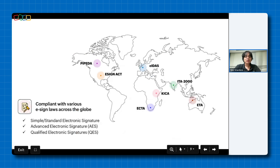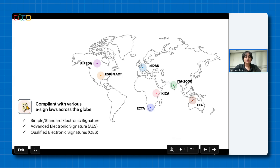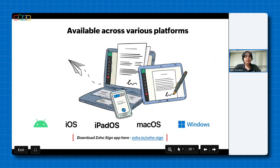Now here comes the million dollar question: Does ZohoSign adhere to the electronic signature laws across the globe? The answer is yes. ZohoSign adheres to various electronic and digital signature laws across the globe such as PIPEDA in Canada, ESIGN Act in the US, eIDAS in Europe, KICA and ECTA in Africa, IT 2000 in India, and ETA in Australia and other parts of Southeast Asia. This has given us the regional provisions for advanced electronic signatures and qualified electronic signatures.